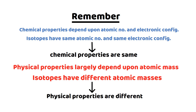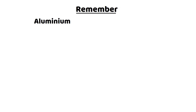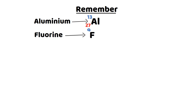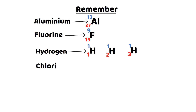Just a few elements have only one isotope. For example, aluminum has only one isotope, shown as Al-13-27. Similarly, fluorine also has only one isotope, shown as F-9-19. Most of the elements have more than one isotope. As discussed, hydrogen has three isotopes, and chlorine has two isotopes — chlorine-17-35 and chlorine-17-37.